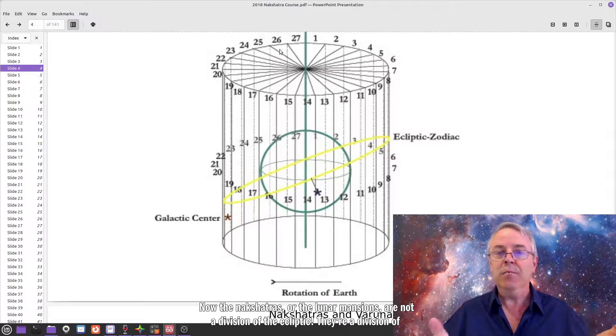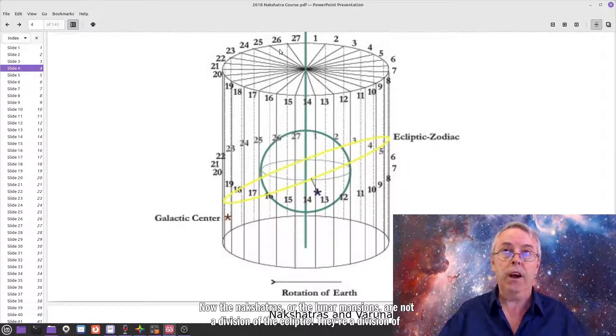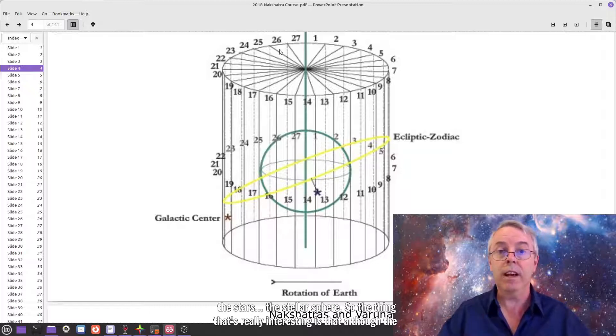Now, the nakshatras, or the lunar mansions, are not a division of the ecliptic. They're a division of the stars, the stellar sphere.